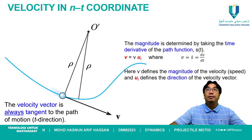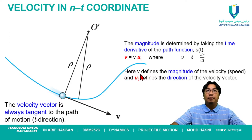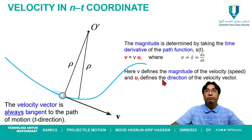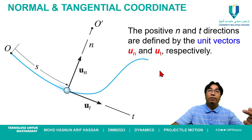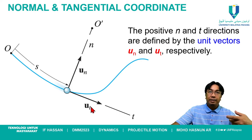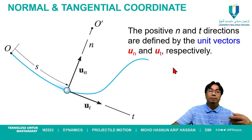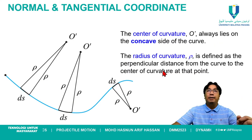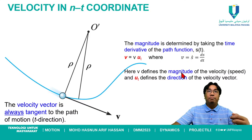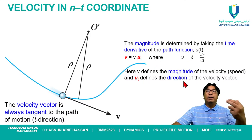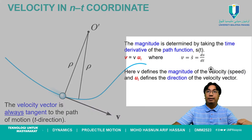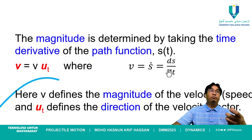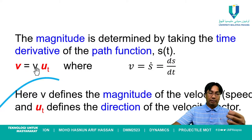Going back to the slides: V (lowercase) defines the magnitude of velocity, and UT defines the direction — it is the unit vector in the tangential axis. So V gives the magnitude, and UT indicates the direction is in the tangential axis. For velocity, there is only a tangential component — no normal component.